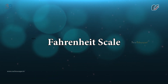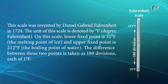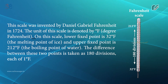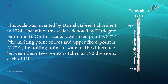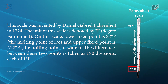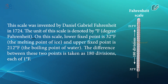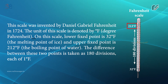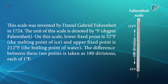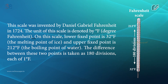The Fahrenheit scale was invented by Daniel Gabriel Fahrenheit in 1724. The unit of this scale is denoted by degree Fahrenheit. On this scale, the lower fixed point is 32 degree Fahrenheit, the melting point of ice, and the upper fixed point is 212 degree Fahrenheit, the boiling point of water. The difference between these two points is taken as 180 divisions, each of 1 degree Fahrenheit.